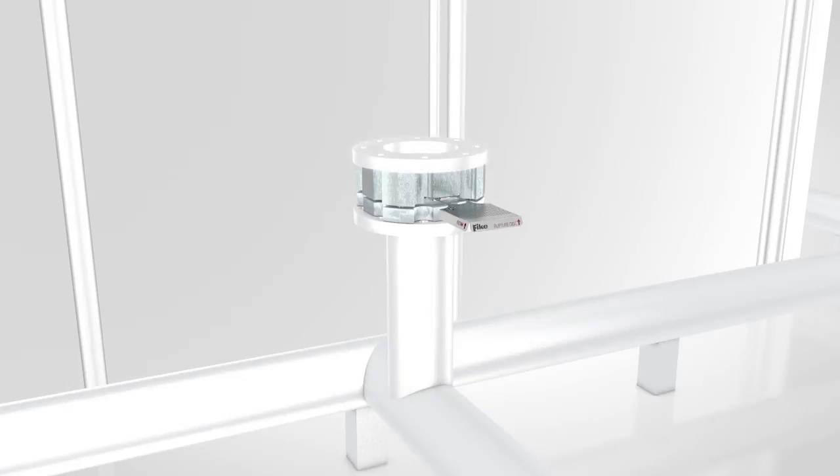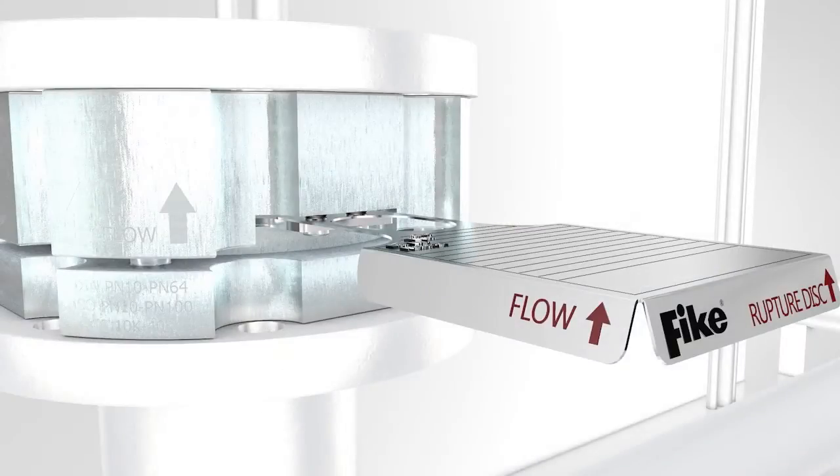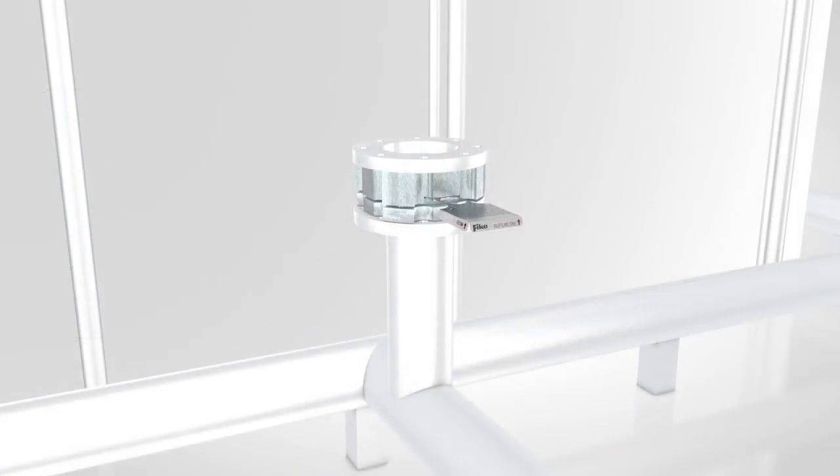Gaskets that are subject to cold flow are not recommended. Carefully place the rupture disc assembly between the piping flanges. Check to ensure the holder flow arrows point downstream.